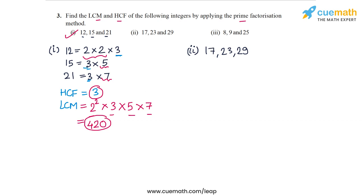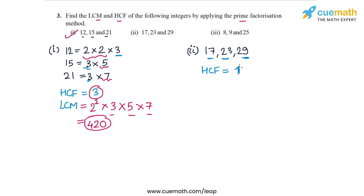The HCF is the product of the smallest power of each common prime factor. None of these prime factors are common — 17 occurs only in the first number, 23 only in the second, and 29 only in the third. So the HCF of this set of integers is simply equal to 1.